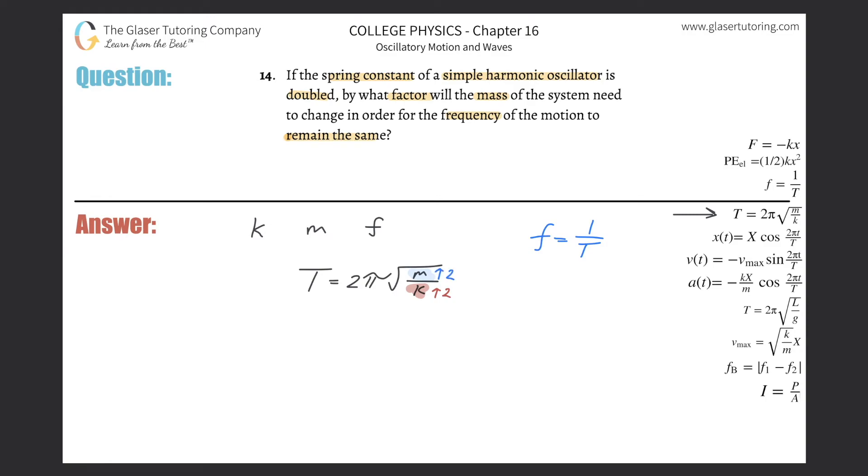Doesn't it kind of make mathematical sense? Let me ask you a question. Pretend you have a simple fraction, let's do something like 10 over 2. Obviously the answer is 5. If you double the denominator,